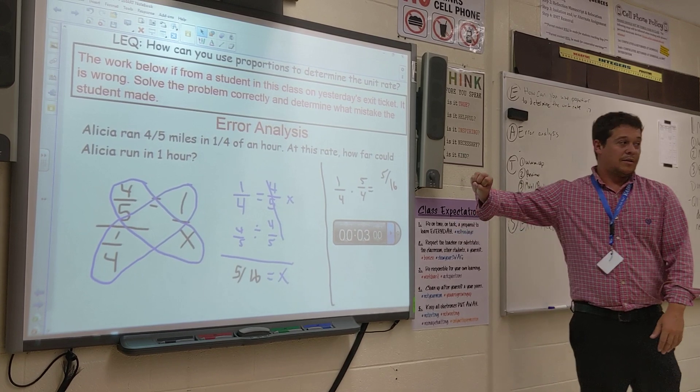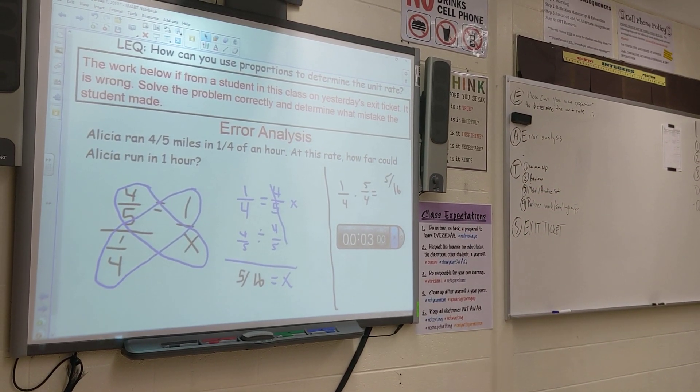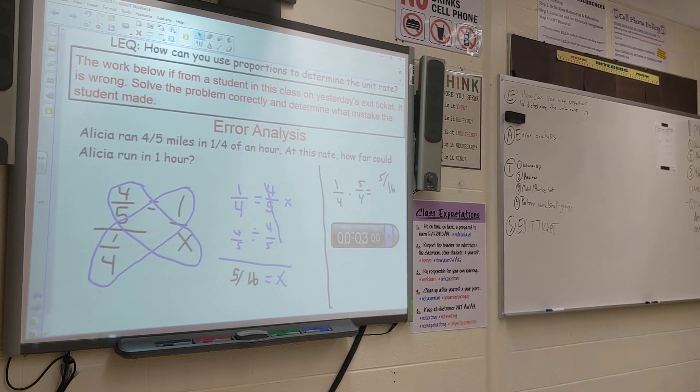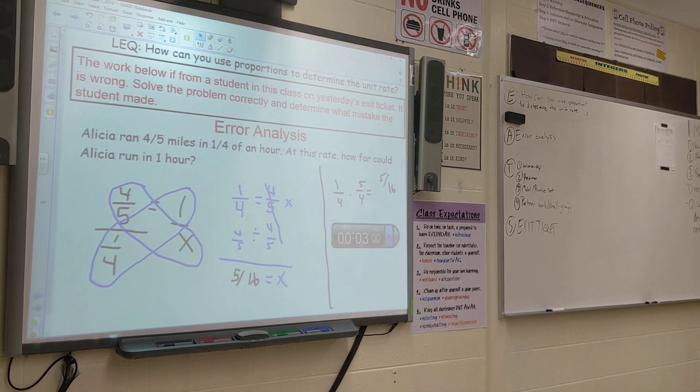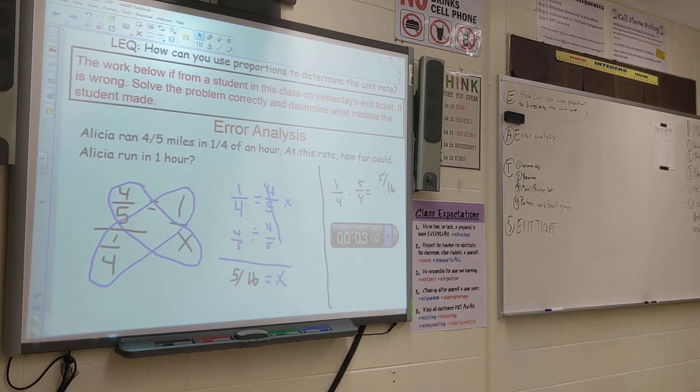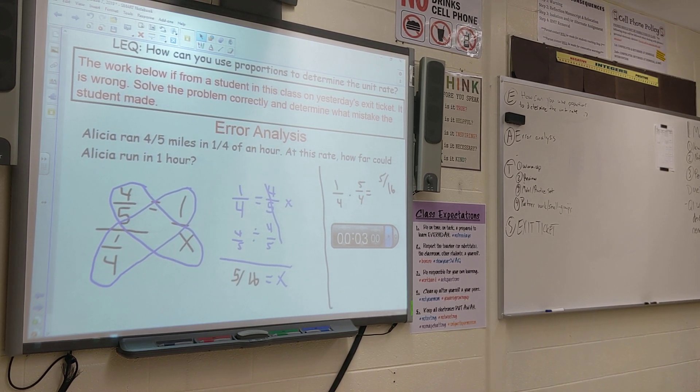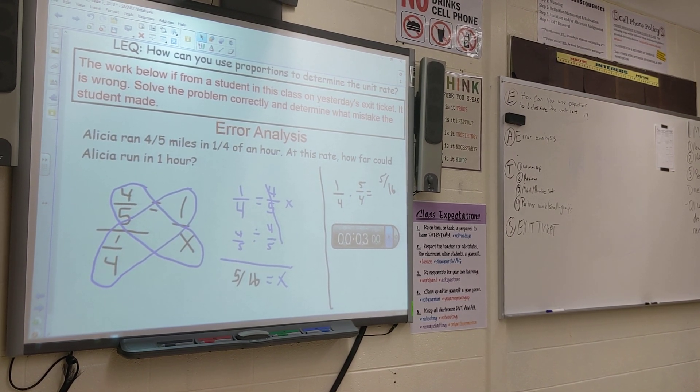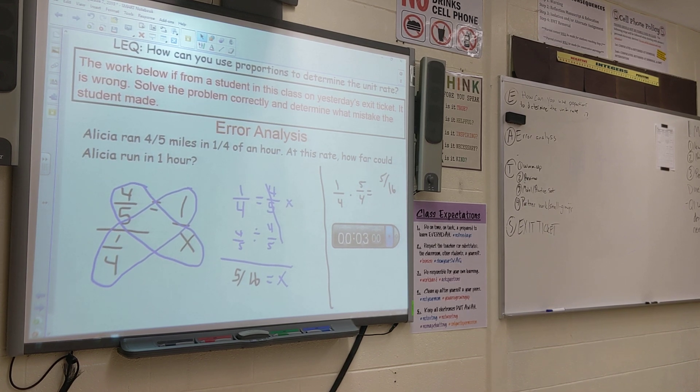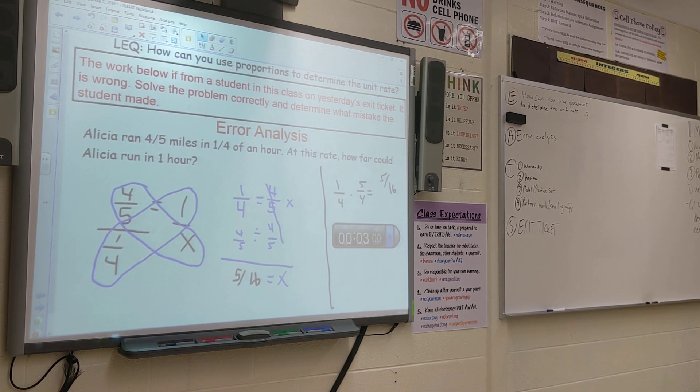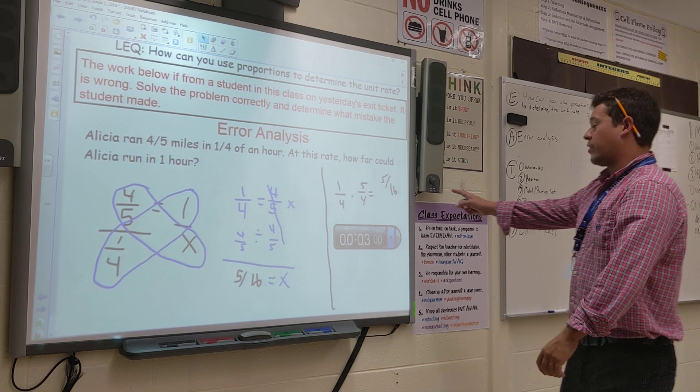Alright, so this was the exit ticket yesterday in the boys' class. I don't know if you guys did one or not. This is from 7.02 yesterday. This was her exit ticket. It says, Alicia ran four-fifths of a mile in one-fourth of an hour. At this rate, how far could Alicia run in one hour? This is one of their work, letter for letter, word for word. This is their answer.